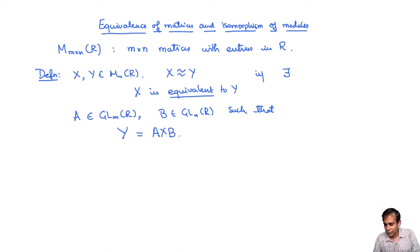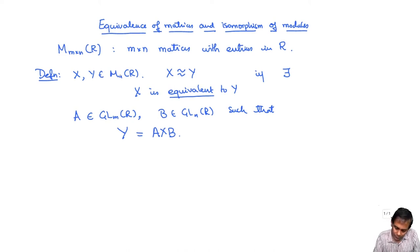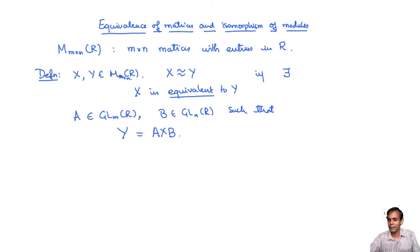It's not difficult to see that this is an equivalence relation. It follows from the fact that these are basically an action of the group GL_M(R) × GL_N(R) on M×N(R). These equivalence classes are called equivalent matrices.